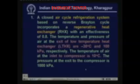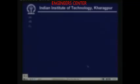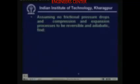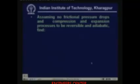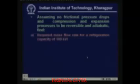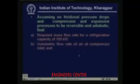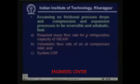It is a simple air cycle refrigeration system with one additional component — a regenerative heat exchanger. It is assumed that there are no frictional pressure drops and compression and expansion processes are reversible and adiabatic. Under these assumptions and from the given data, we have to find the required mass flow rate for a refrigeration capacity of 100 kilowatts, the required volumetric flow rate of air at compressor inlet, and the system COP.